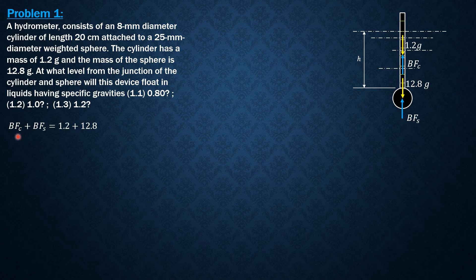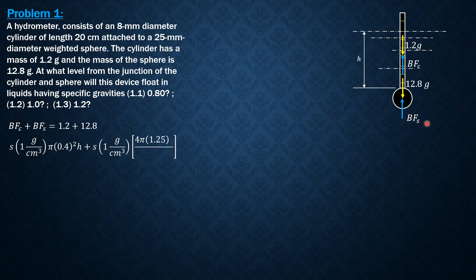So buoyant force in the cylindrical part is equal to specific gravity times density of water, which is 1 gram per cubic centimeter, times the volume, which is 5.4 cm² times h. So 5.4 cm² times h plus specific gravity of the liquid times 1 gram per cubic centimeter, the density of water, times the volume of the sphere, which is 4/3 π radius 1.25 cm³, equals 1.2 plus 12.8, which is 14.